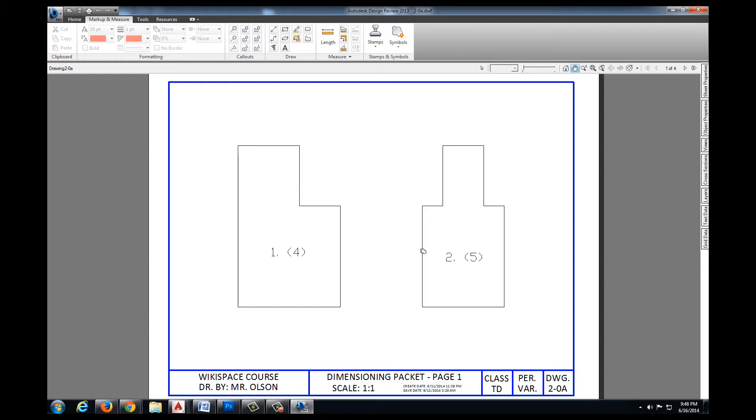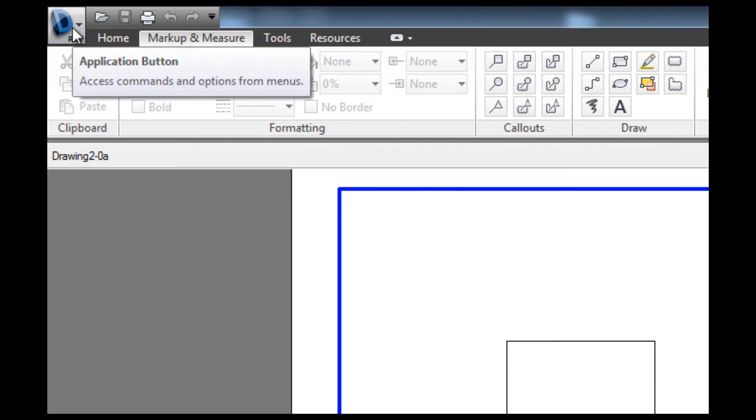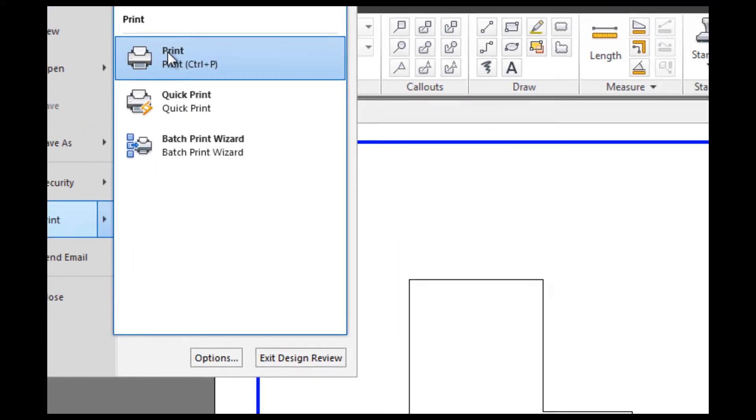Now what we need to do is we need to print this out. So I'm going to come up to the application menu in the top left, left click one time, and I'm going to come down to my print option and select print.